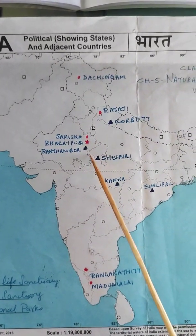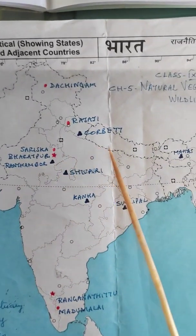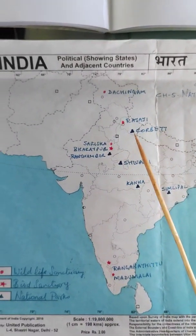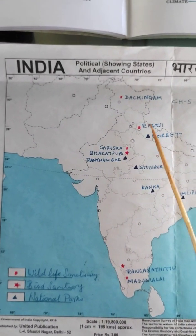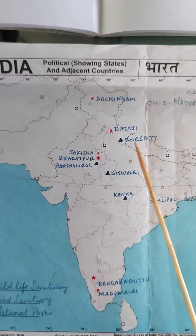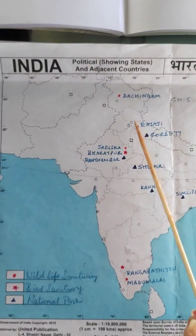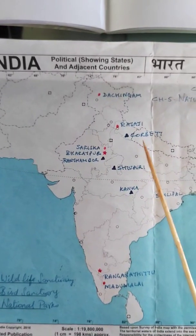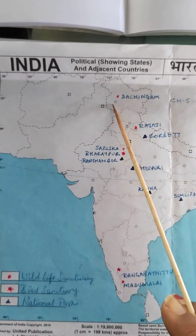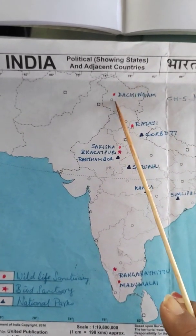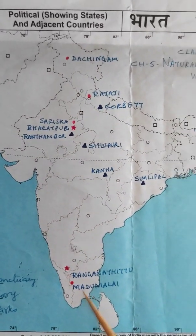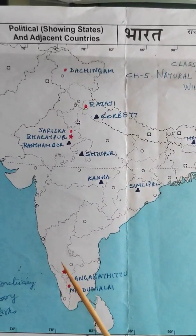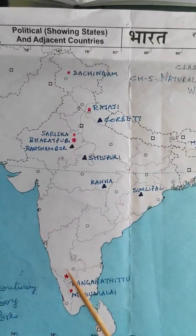This is a confusing area. Similarly, for Corbett and Rajaji: Rajaji is a wildlife sanctuary and Corbett is a national park. Dachigam is a wildlife sanctuary in Jammu and Kashmir. The bird sanctuary of Ranganathittu is in Karnataka — it will already come marked in the paper and you just have to recognize it.